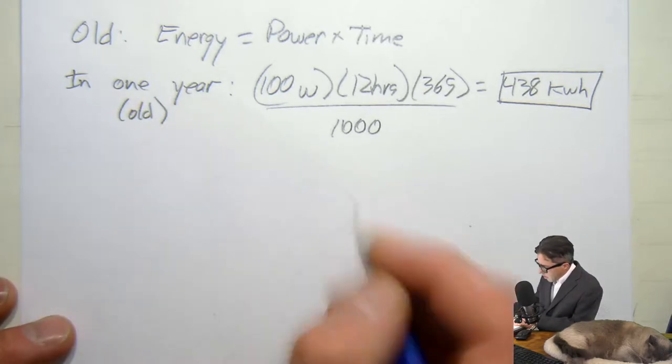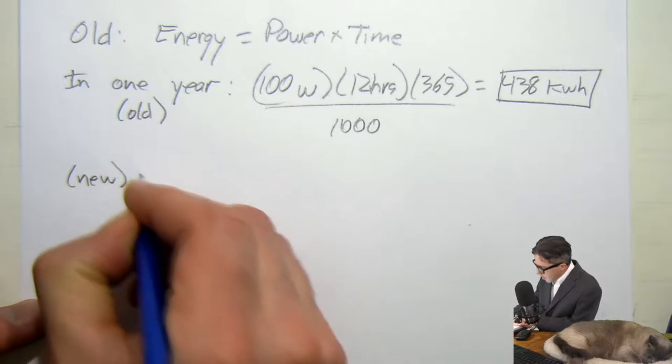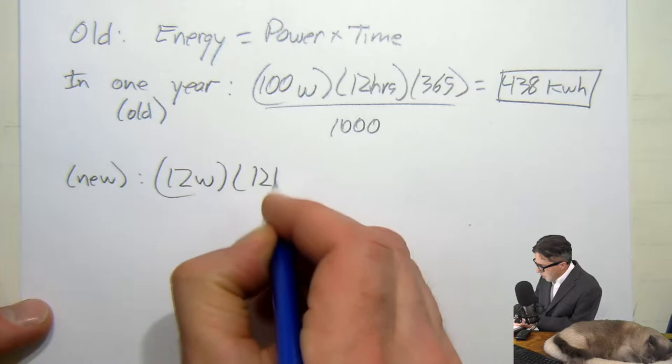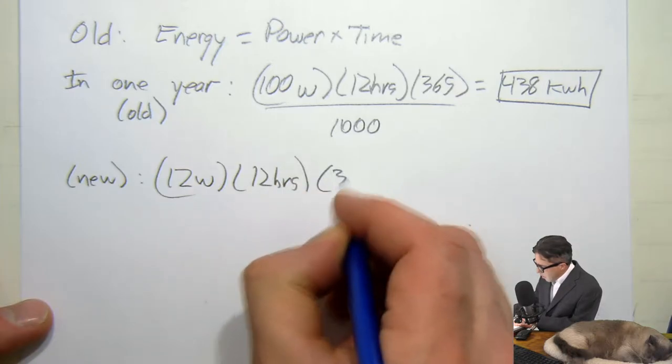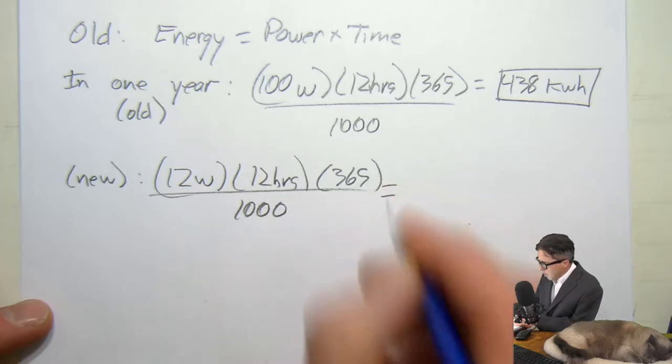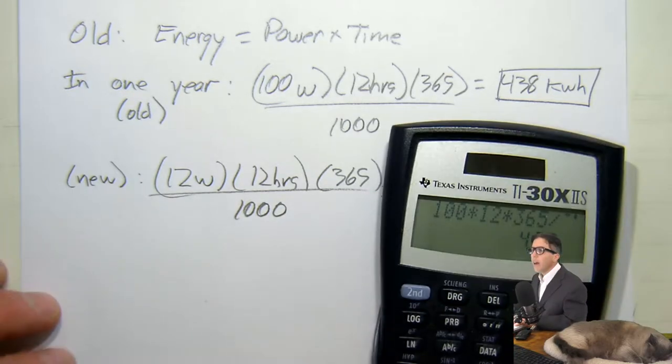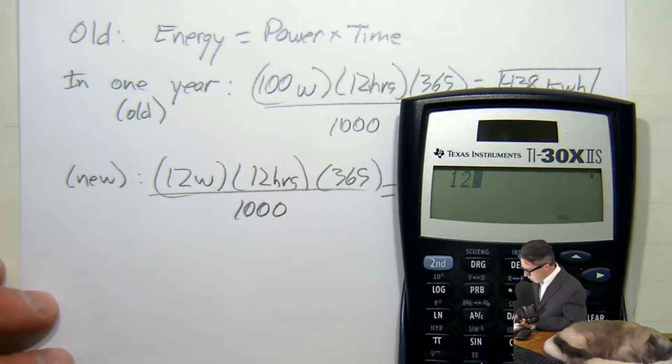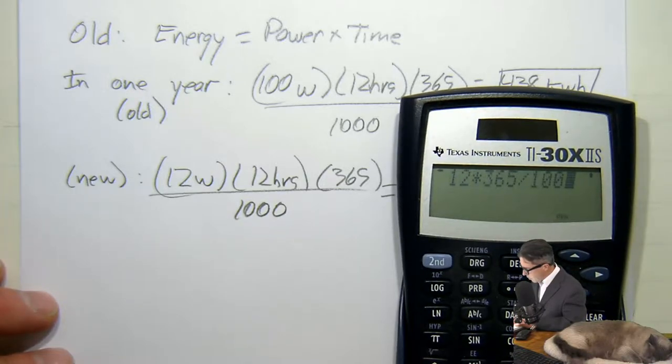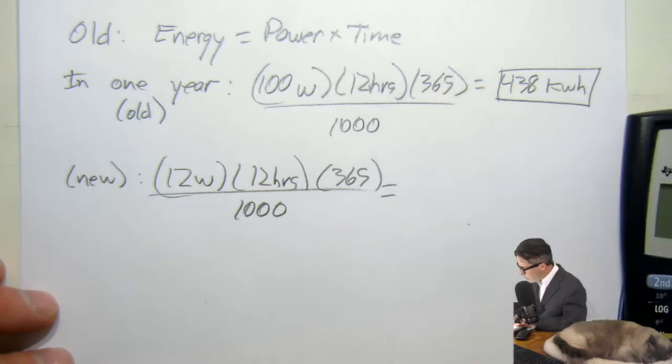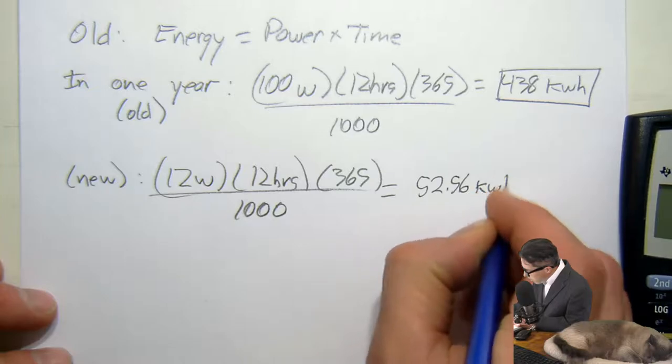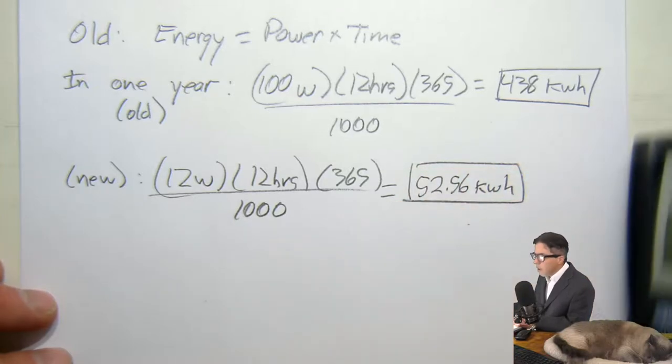The new bulb is 12 watts, 12 hours a day, 365 days in the year, and I'm going to go ahead and divide by 1,000 to convert it to kilowatt hours. And 12 times 12 times 365 divided by 1,000 equals 52.56 kilowatt hours.